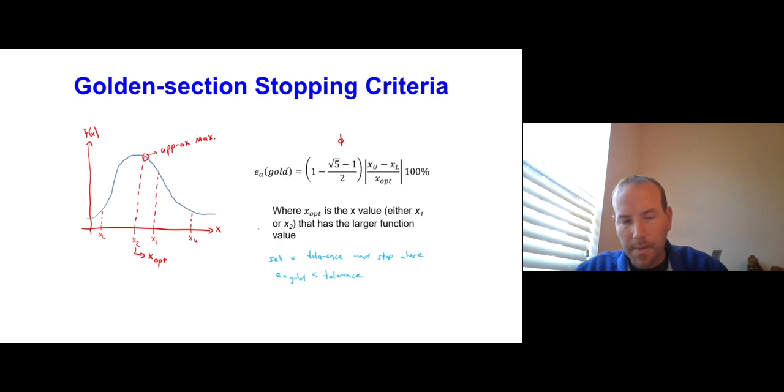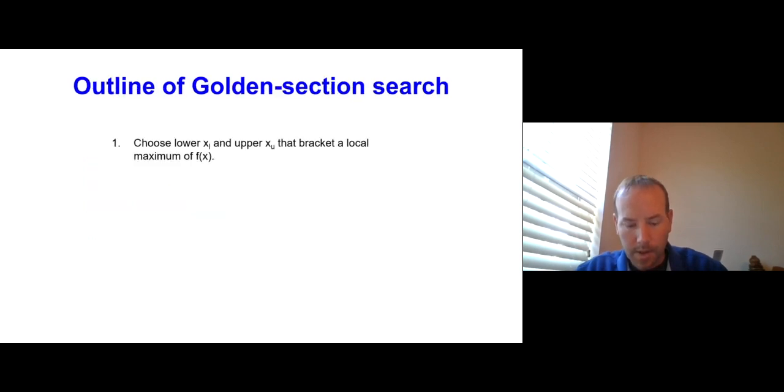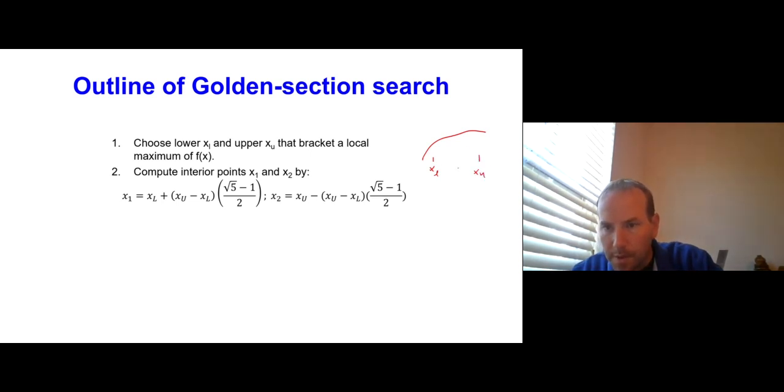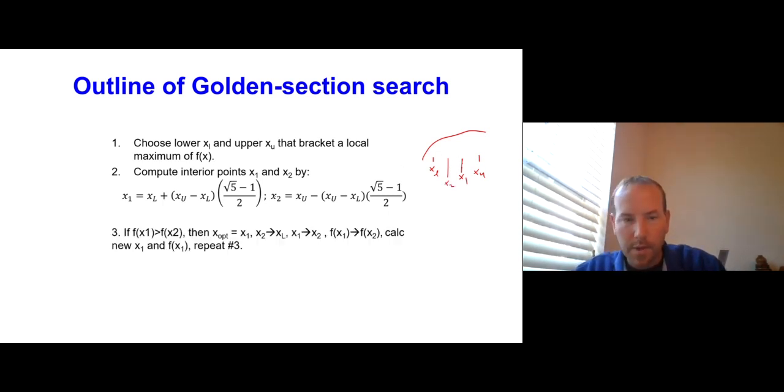Let's now outline how the golden section search works. We're going to first choose a lower XL and an upper XU that bracket a local maximum of f of x. Then we're going to compute interior points by this golden section equations. We've got XL and XU. Then we're going to compute x1 and x2 based on these equations.